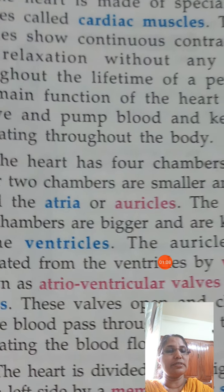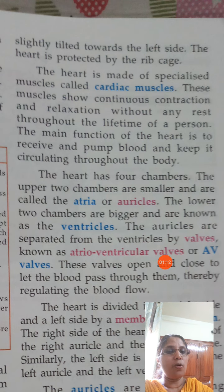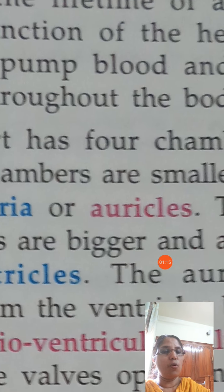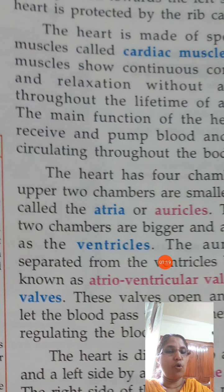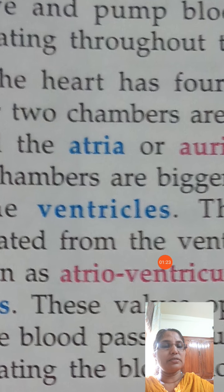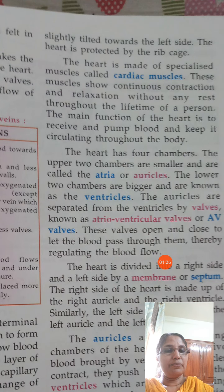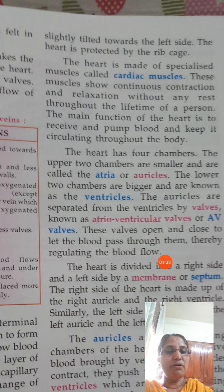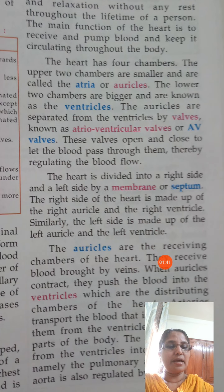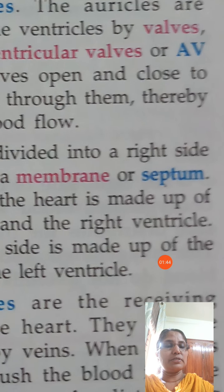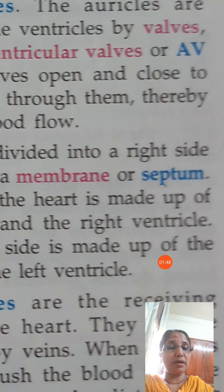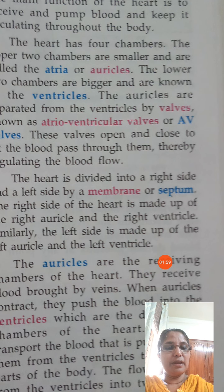The heart has four chambers. The upper two chambers are small and are called atria or auricles. The lower two chambers are bigger chambers — they are known as the ventricles. Atrioventricular valves are present between the auricles and ventricles, controlling the flow of blood. The heart is divided into right side and left side by a membrane or septum, dividing it into right and left chambers.